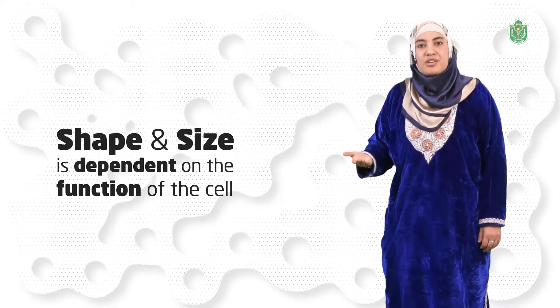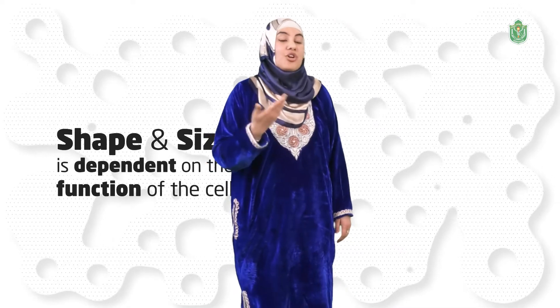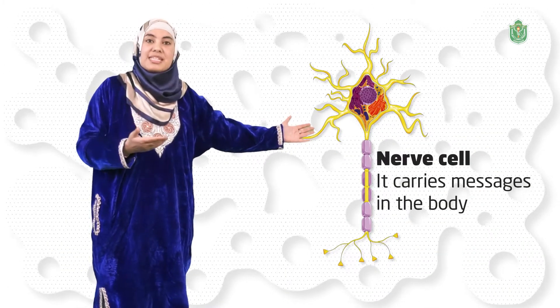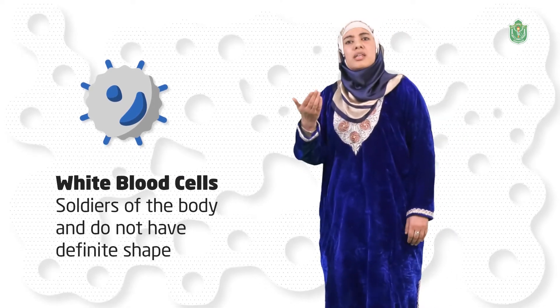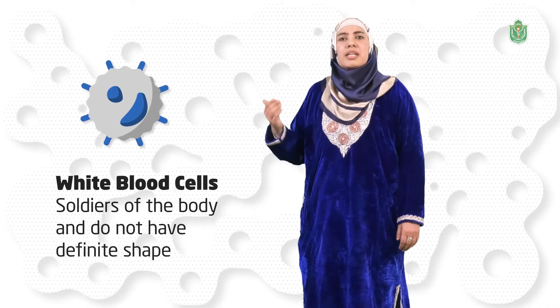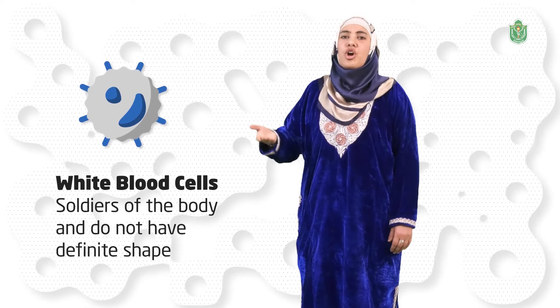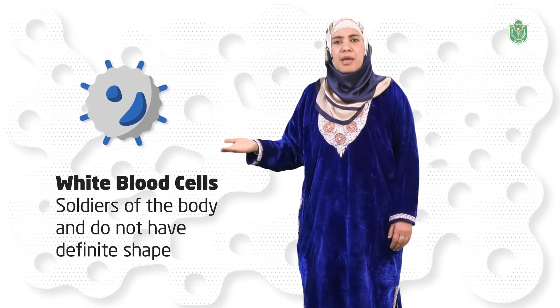Are these cells similar in their shape and size? No, they show variation in terms of their shape and size. Shape of the cell is dependent on the function of the cell. Let's take an example of nerve cell. Nerve cells carry messages in the body and are long and have branched heads. Some cells may not have a definite shape. For example, white blood cells in our body are irregular in shape. They are known as the soldiers of the body. They have to reach different parts of the body, so they do not have a definite shape and change their shape as per the requirement.